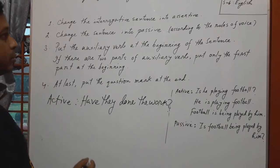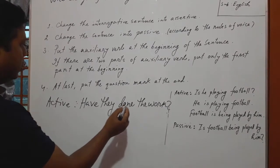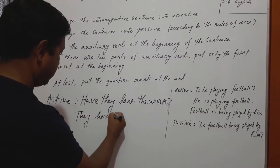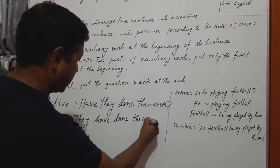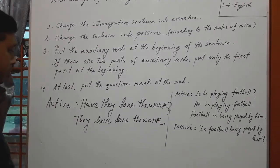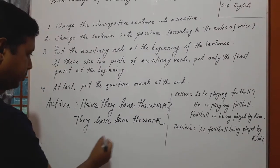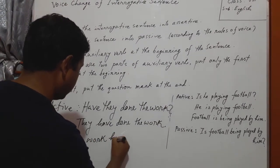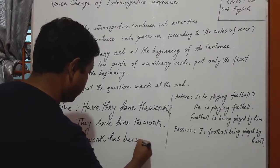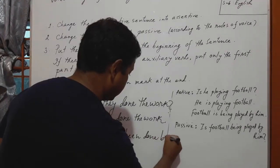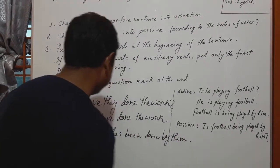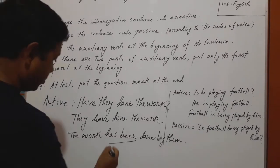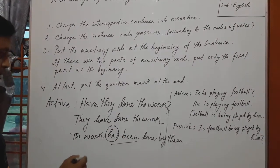First, we have to change this sentence into assertive. The assertive will be: 'They have done the work.' What will be the passive? The passive will be: 'The work has been done by them.' Now we will notice that there are two parts of the auxiliary verb, and we will use only the first part at the beginning of the sentence.